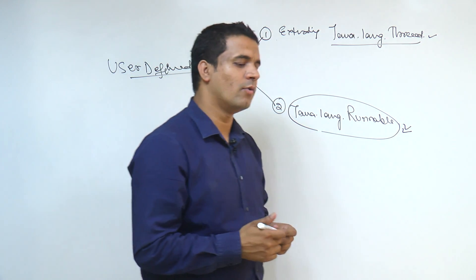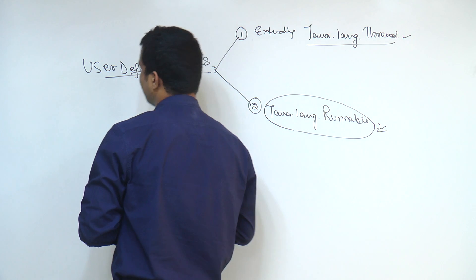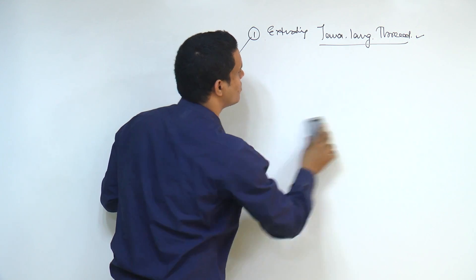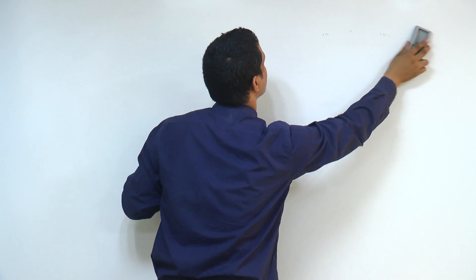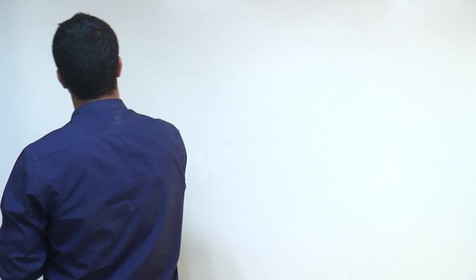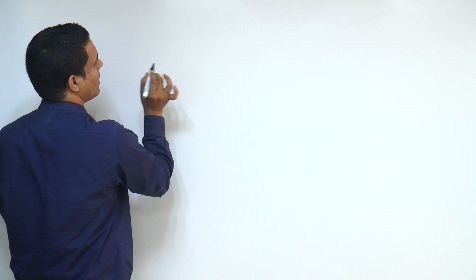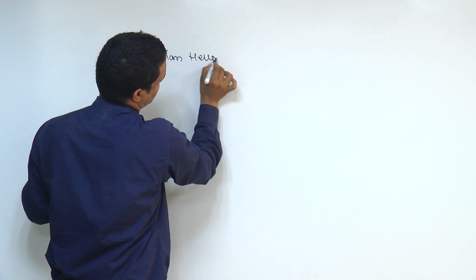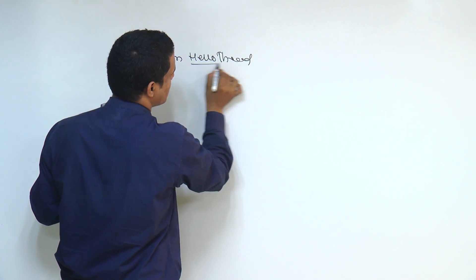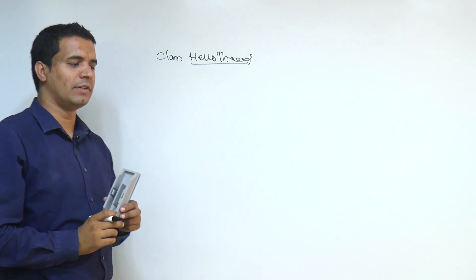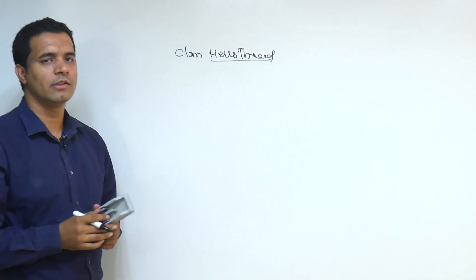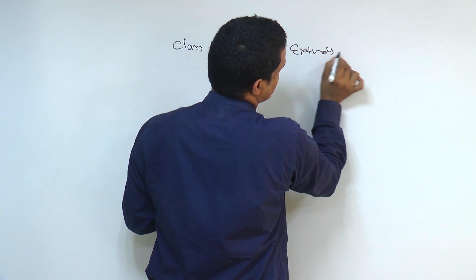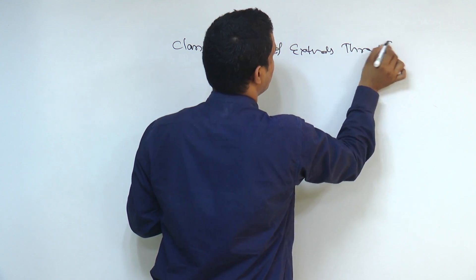The first thing is, when we are going to create our own threads, we will see what the user-defined processes are. For example, when you are writing a class — suppose the class name is HelloThread — whenever you are writing any thread class, it must first extend the Thread class.